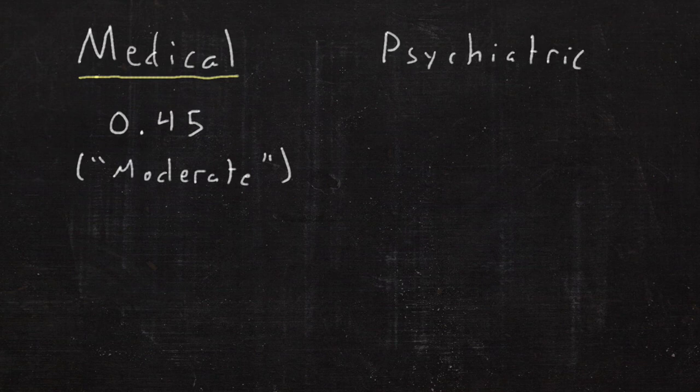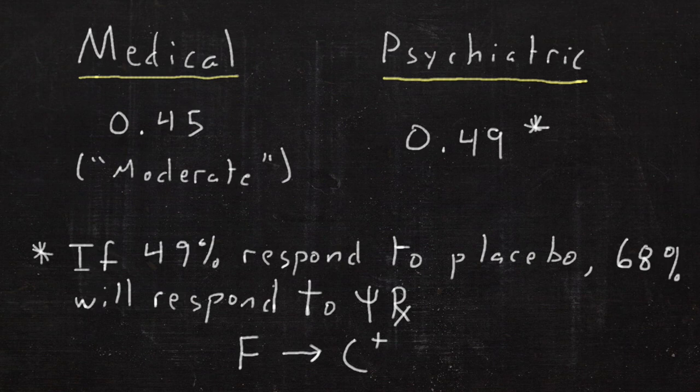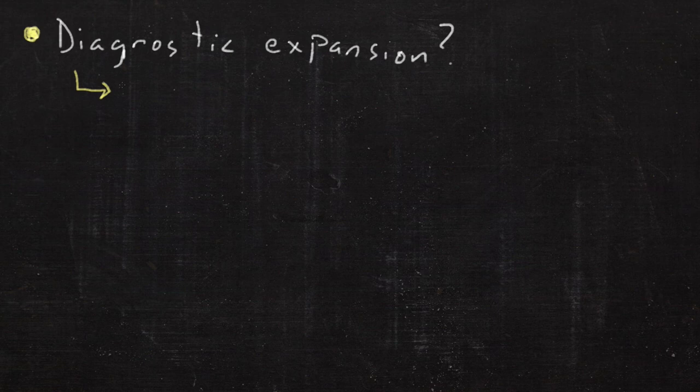Well, medical drugs had an effect size of 0.45, which is considered moderate statistically. Psychiatric drugs had a 0.49. For comparison, if 49% of people responded to a placebo, that means 68% would respond to the psychiatric treatments, like going from an F to a C-plus in terms of a grade.